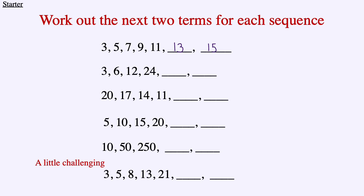The next sequence is 3, 6, 12, 24. Each time we are multiplying the term by 2: 3 times 2 is 6, 6 times 2 is 12, 12 times 2 is 24. So 24 times 2 gives us 48, and then 48 times 2 gives us 96.